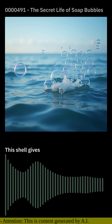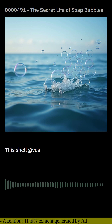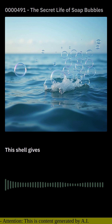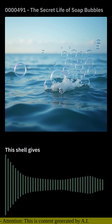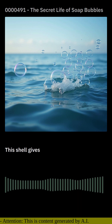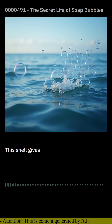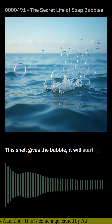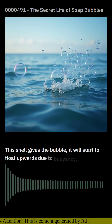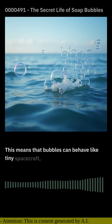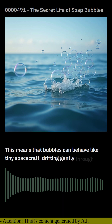Now, here's where things get really interesting. The shape of a bubble is determined by the balance between surface tension and the inward pull of gravity. When you blow a bubble, it wants to be spherical because that's the shape that minimizes its surface area. But if there's enough air inside the bubble, it will start to float upwards due to buoyancy. This means that bubbles can behave like tiny spacecraft drifting gently through the air.